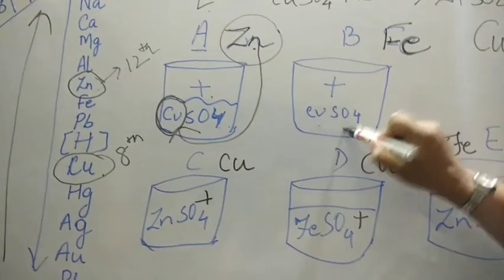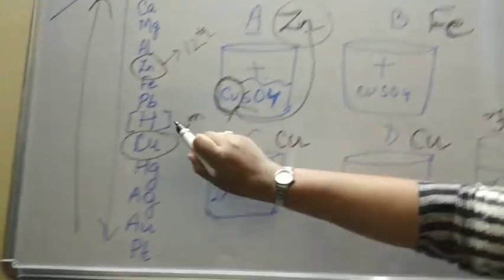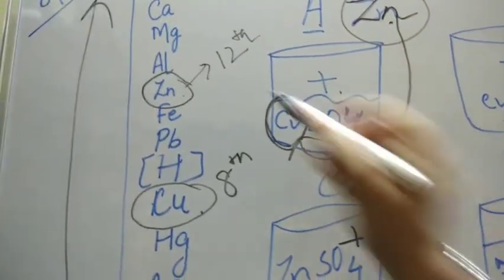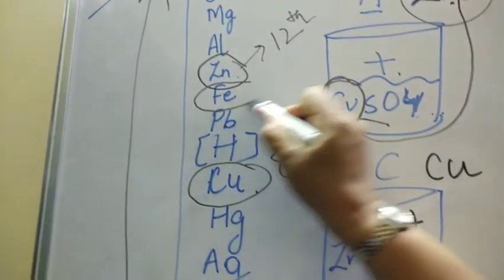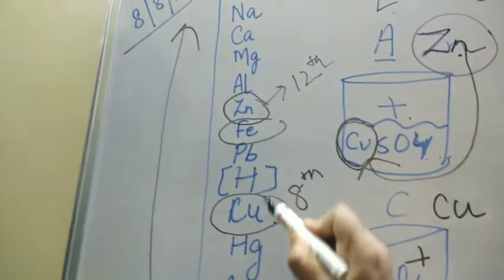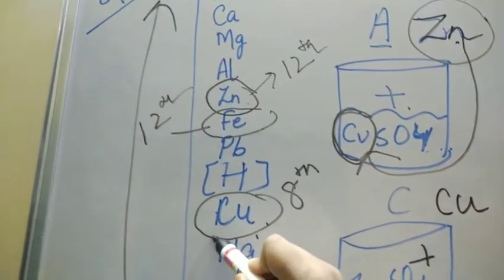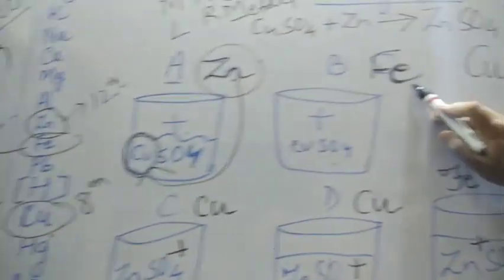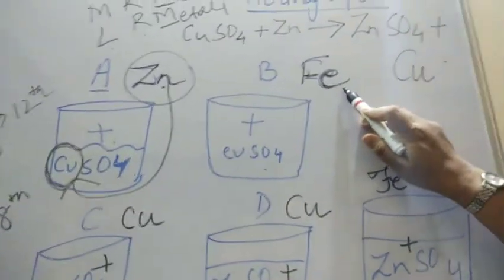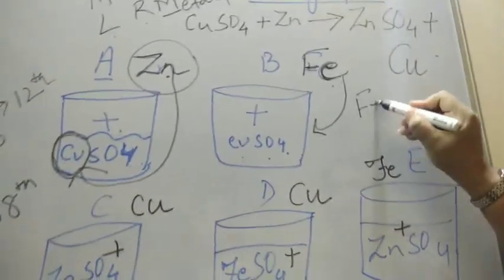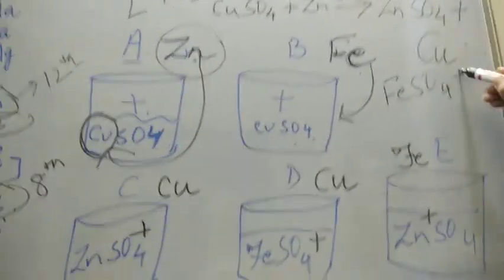CuSO4 and iron. Go to reactivity series again and see which one is higher, which one is lower in reactivity series. So at top is iron. And below iron is copper. So definitely here iron will be 12 standard and copper will be your 8 standard. So now, iron is all alone over here. So it will tell that I want to take up the place. So it will make it leave the place. And this will become FeSO4 plus Cu.